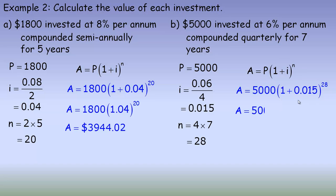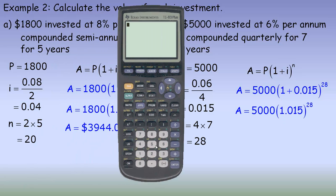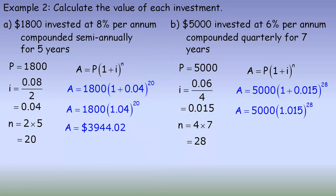Using the calculator: 5,000 times 1.015 to the power of 28. That comes to $7,586.11. That one also did not round up. So that's the power of compound interest.